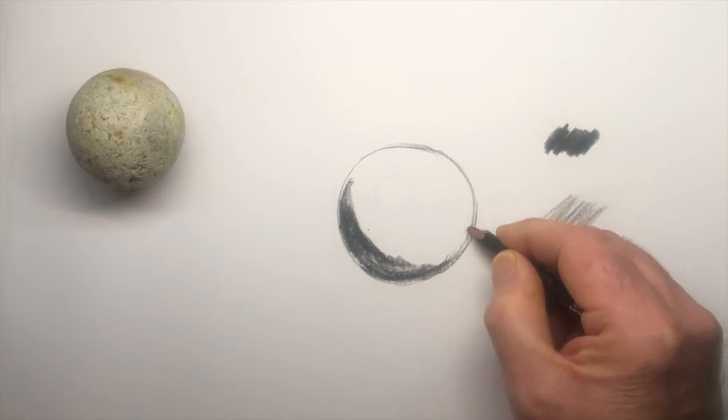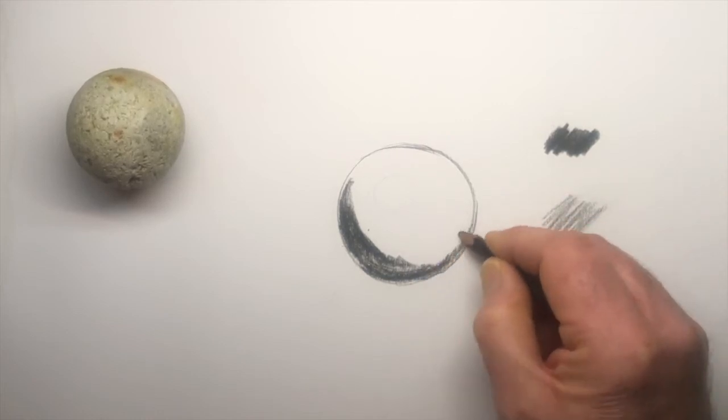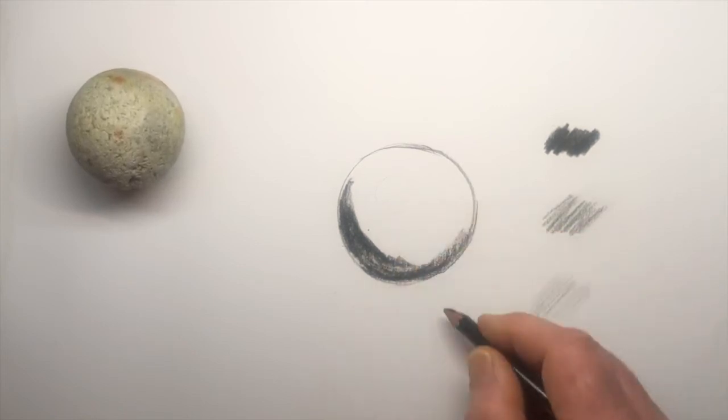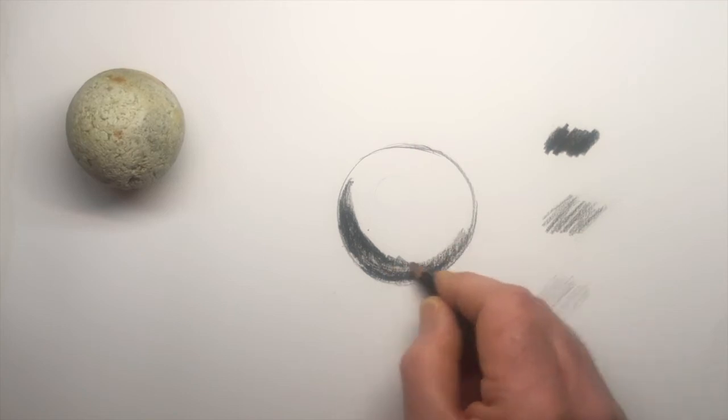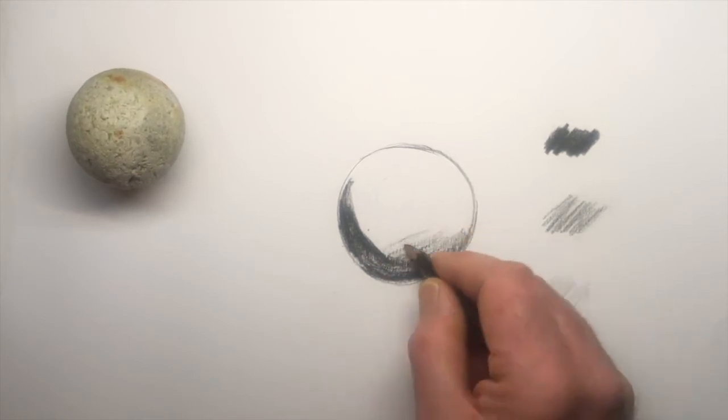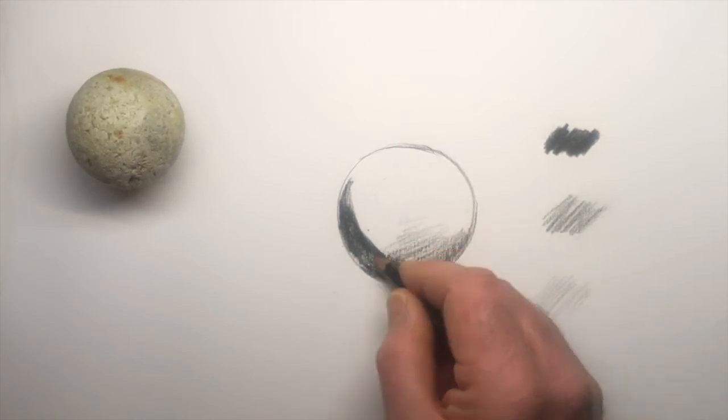You can see that it's a bit dark on that side, so I'm just putting in a tone there. Now as I'm working towards the center, I'm going to get lighter as I move into the center, getting lighter. You need to do that all the way around your drawing.